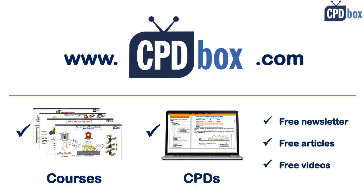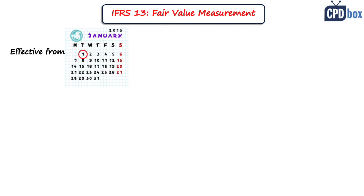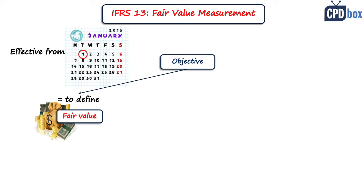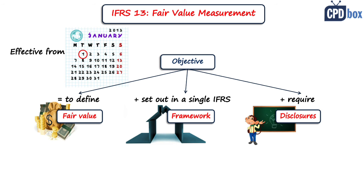Before IFRS 13, guidance for setting fair value differed throughout the standards, and therefore IFRS 13 Fair Value Measurement was issued. It must be applied for periods starting 1 January 2013 or later. The objective of IFRS 13 is to define what fair value is, set out the framework for measuring it, and require disclosures about fair value measurements.